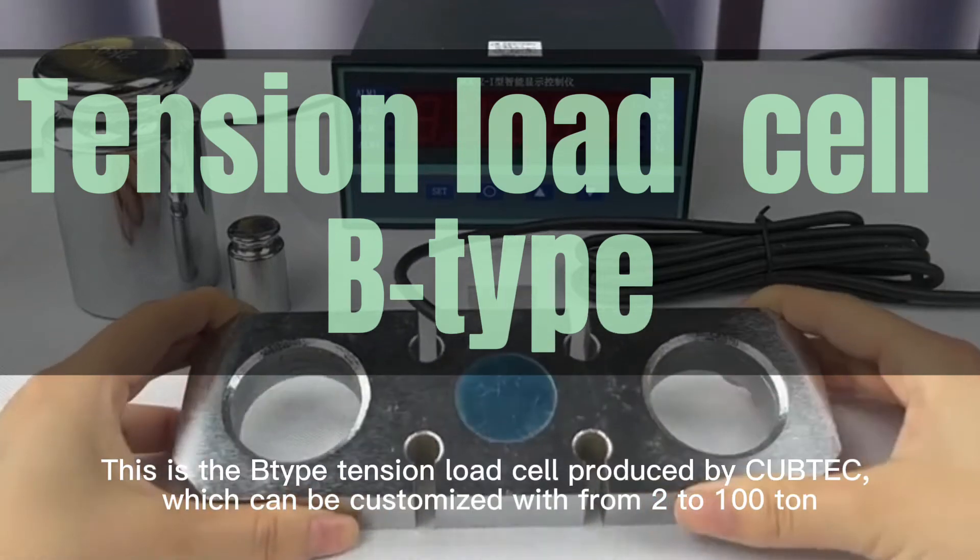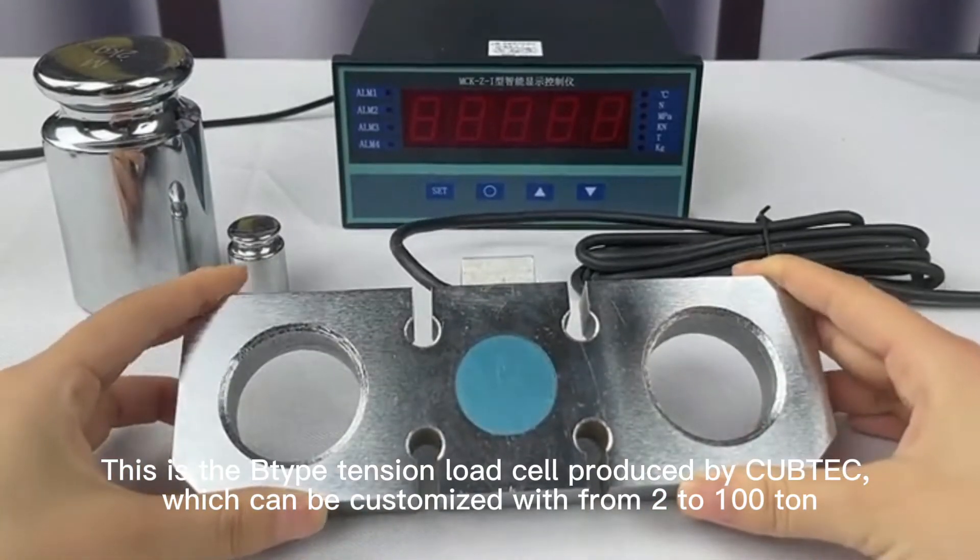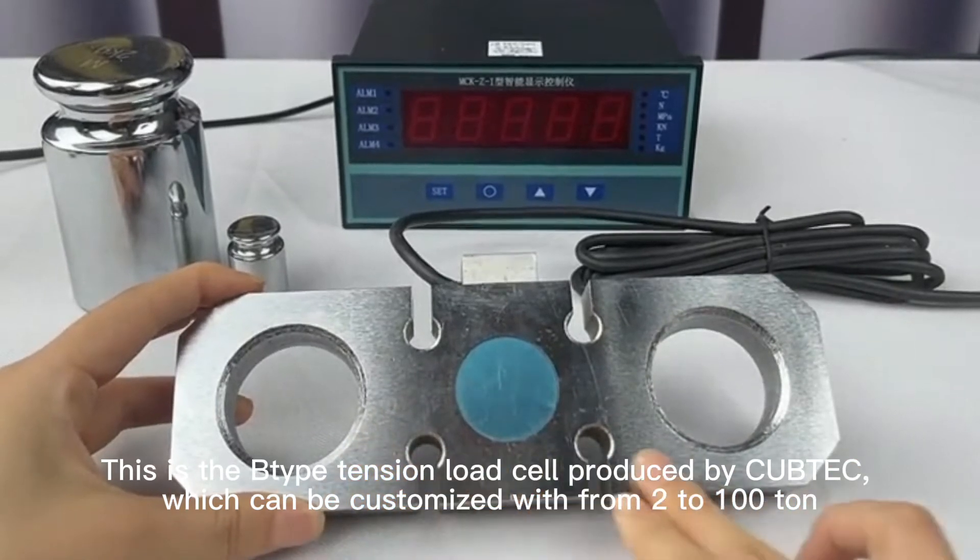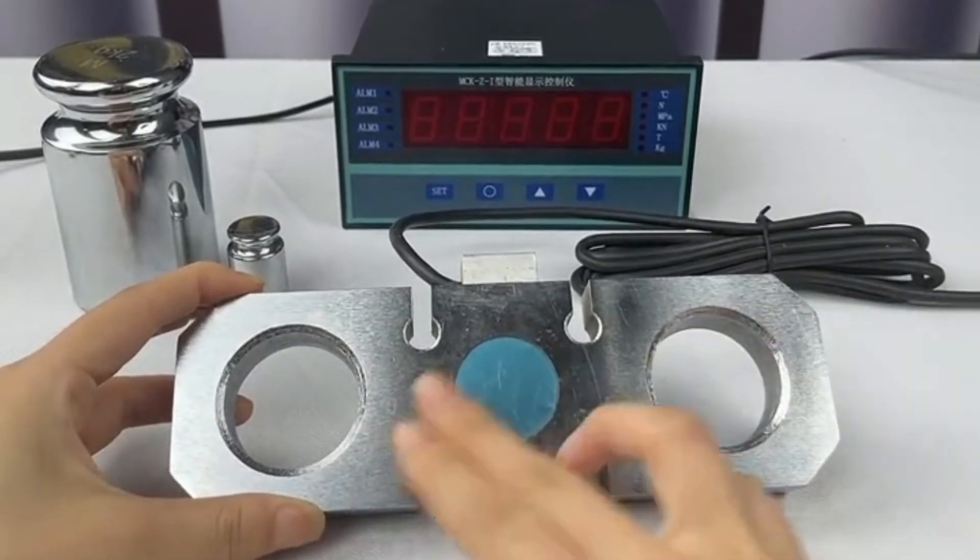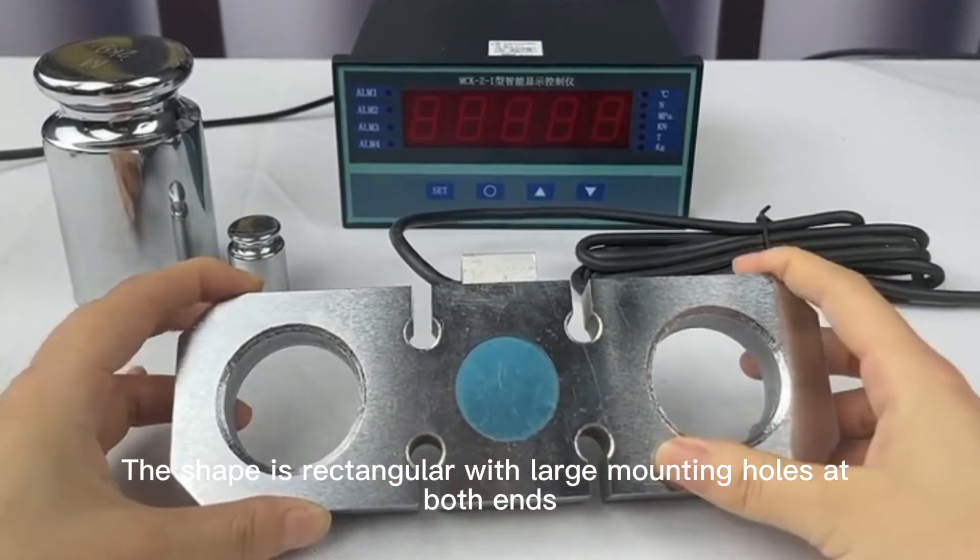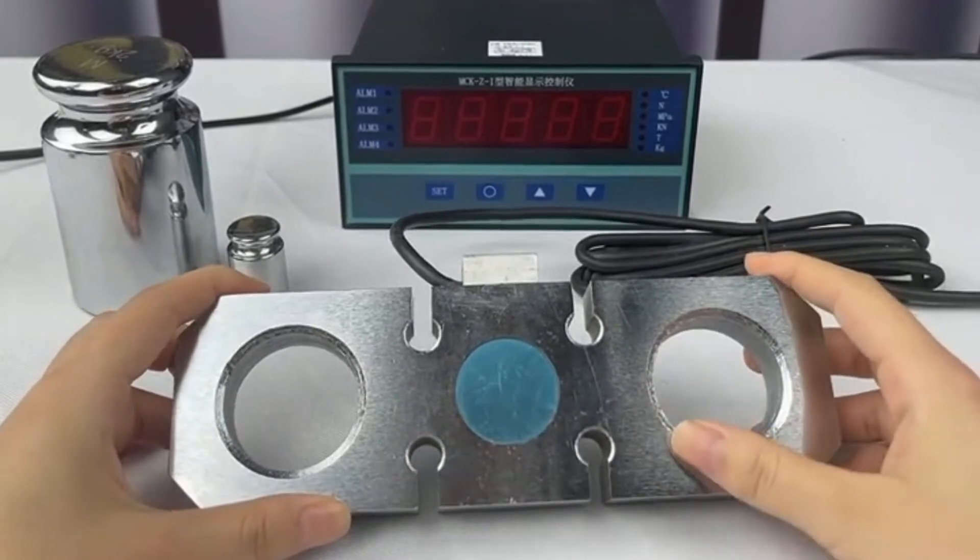This is the type tension load cell produced by CupTech, which can be customized from 2 tons to 100 tons. The shape is rectangular with large mounting holes at both ends.